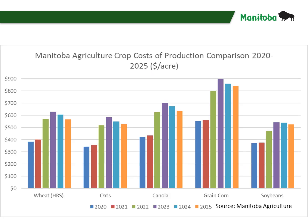This slide shows Manitoba Agriculture's crop costs of production numbers from 2020 to 2025 for hard red spring wheat, oats, canola, corn, and soybeans. In 2022, costs jumped significantly for all crops, with 2023 having the highest costs of production, with costs easing off slightly for 2024 and a little more for 2025. While costs have eased off slightly, they are still historically high. When we consider the decline in grain prices, crop input costs have not declined at the same rate as commodity prices, which is what is causing the cost-price squeeze that we're currently experiencing.